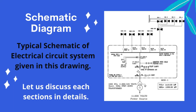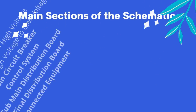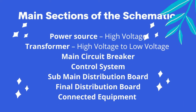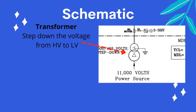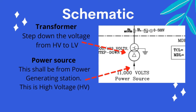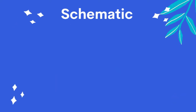A typical schematic of the electrical circuit system is given in this drawing. Let us discuss each section in detail. The transformer steps down the high voltage to low voltage. The power source shall be from a generating station and is at high voltage.